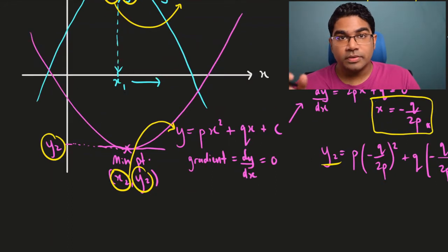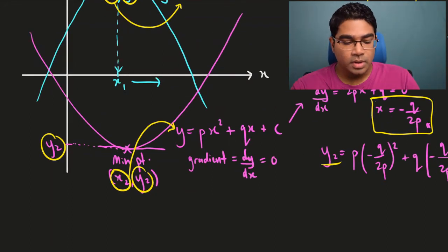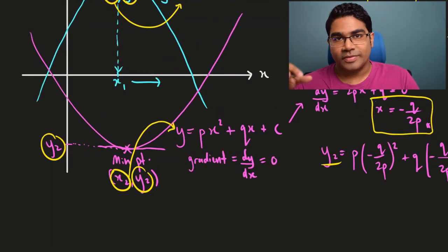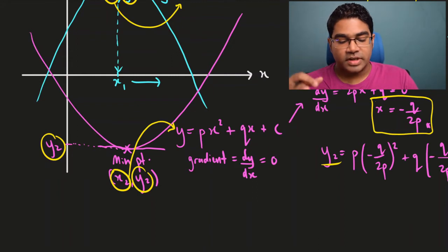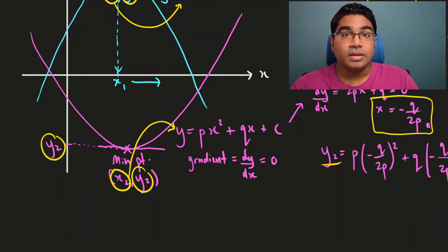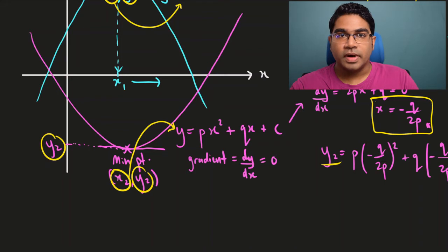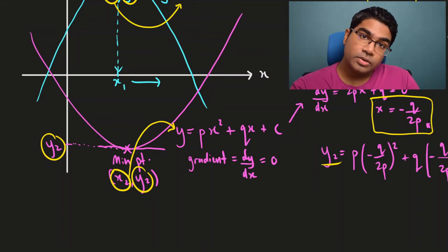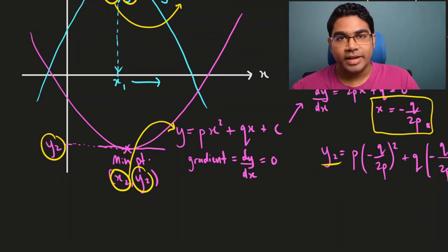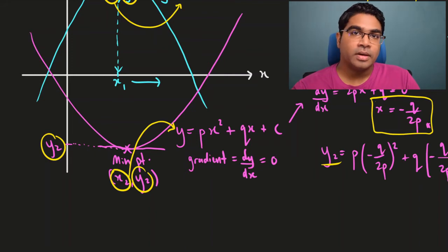So you can see the same principle applies to the minimum value as well. If we want to find the minimum value of y, we find the first derivative of y, equate it to 0, and when we find the value of the other variable we substitute back into the original equation to get the minimum value of y.